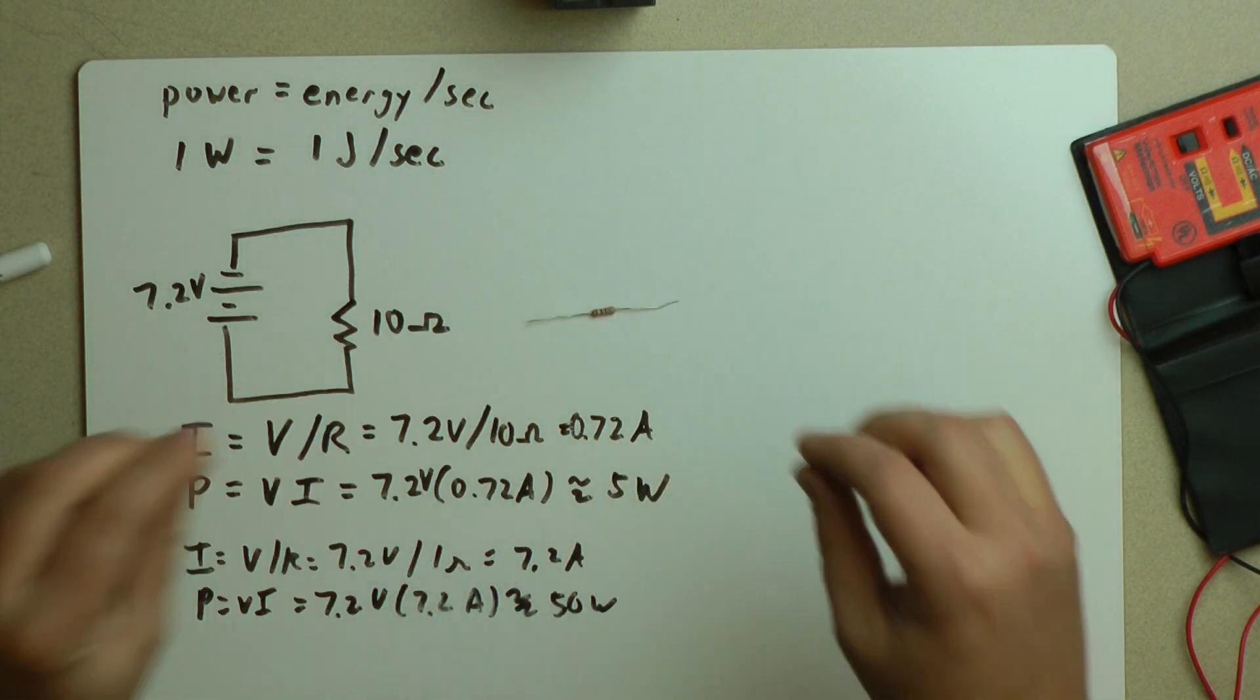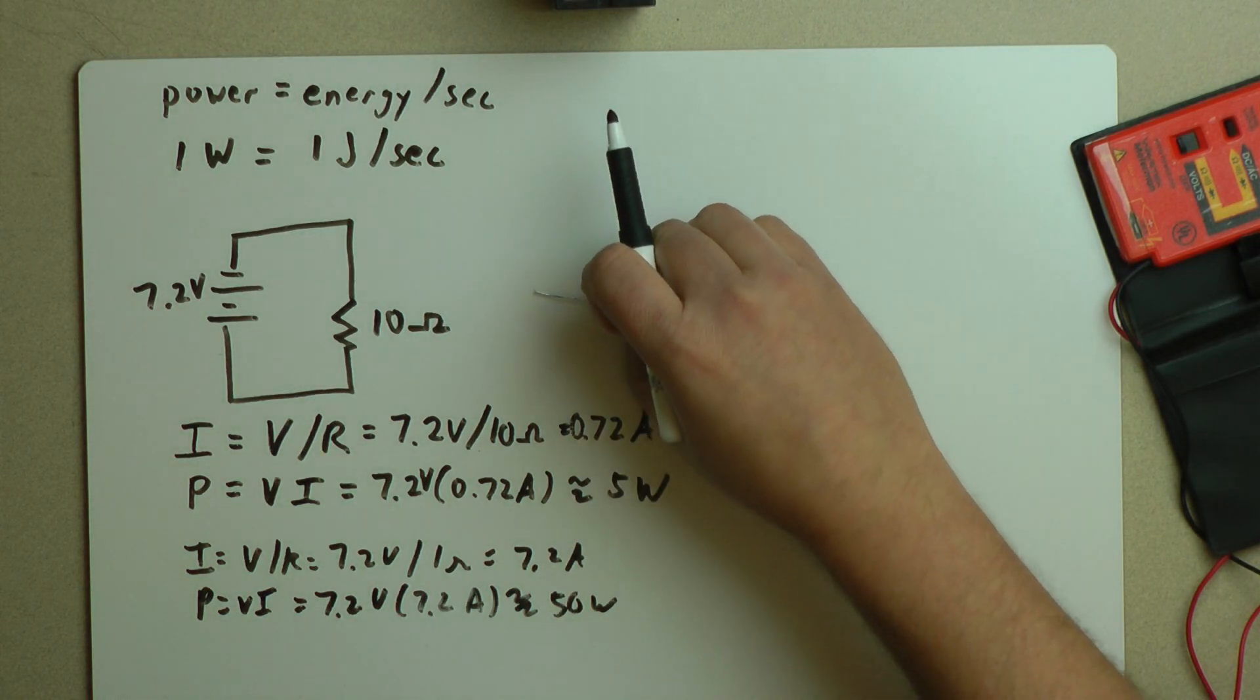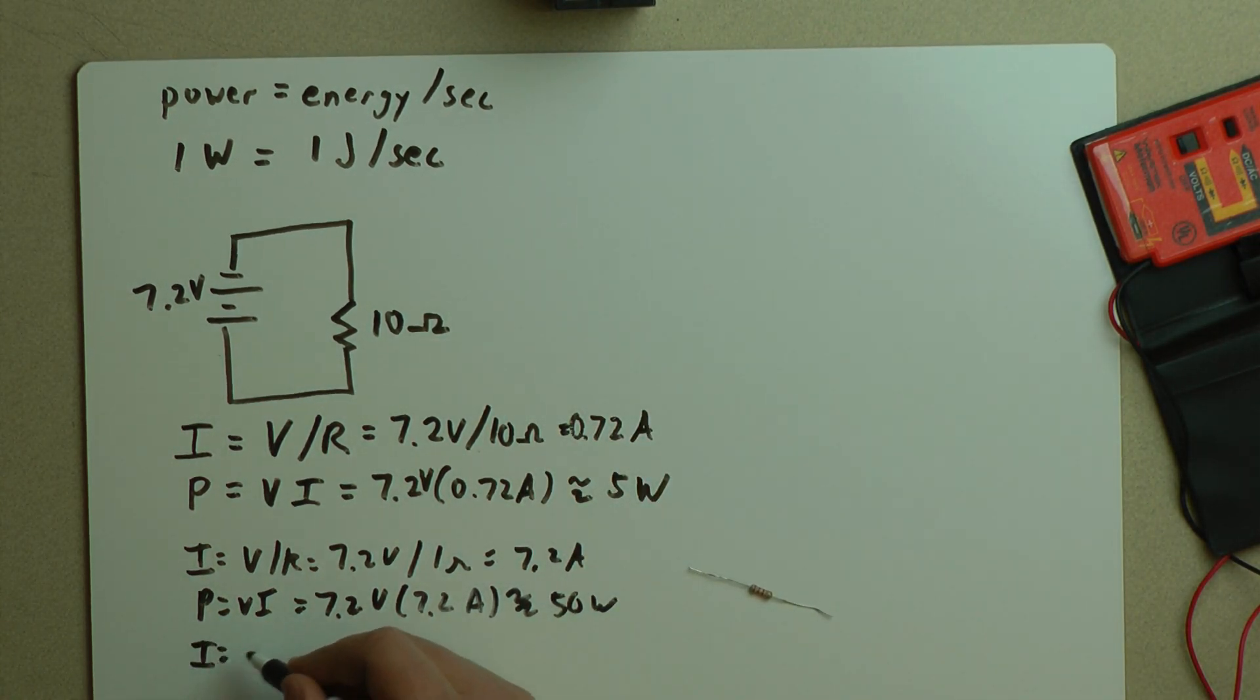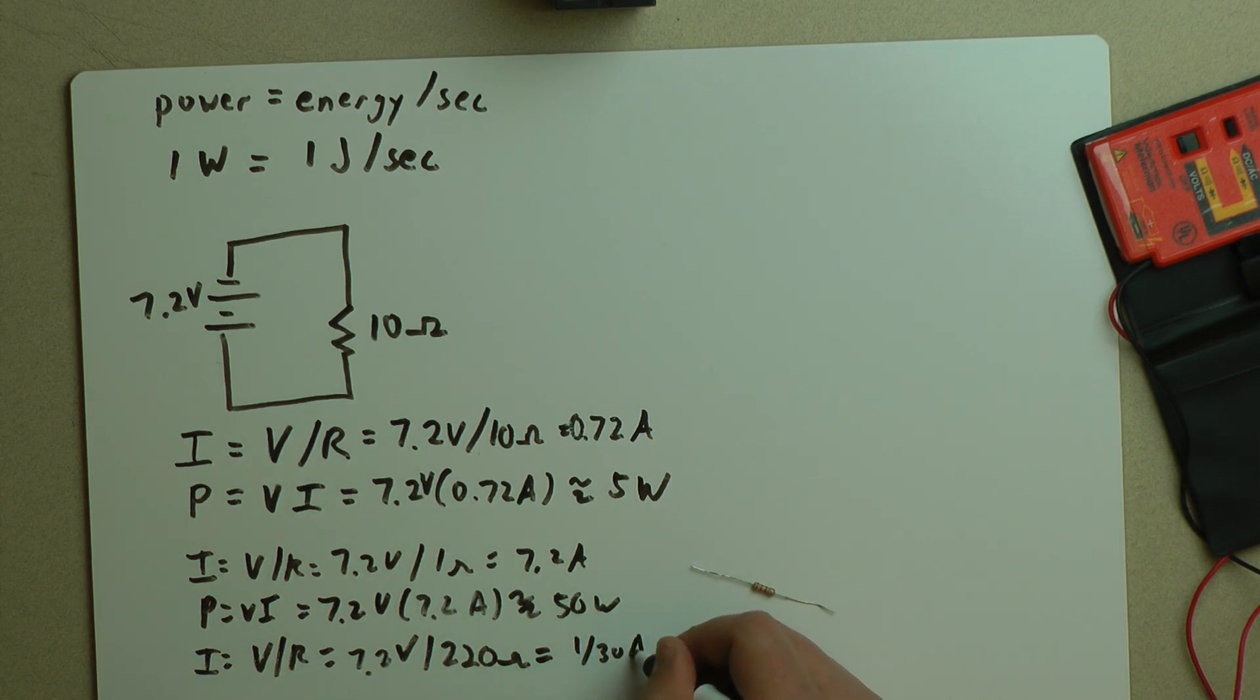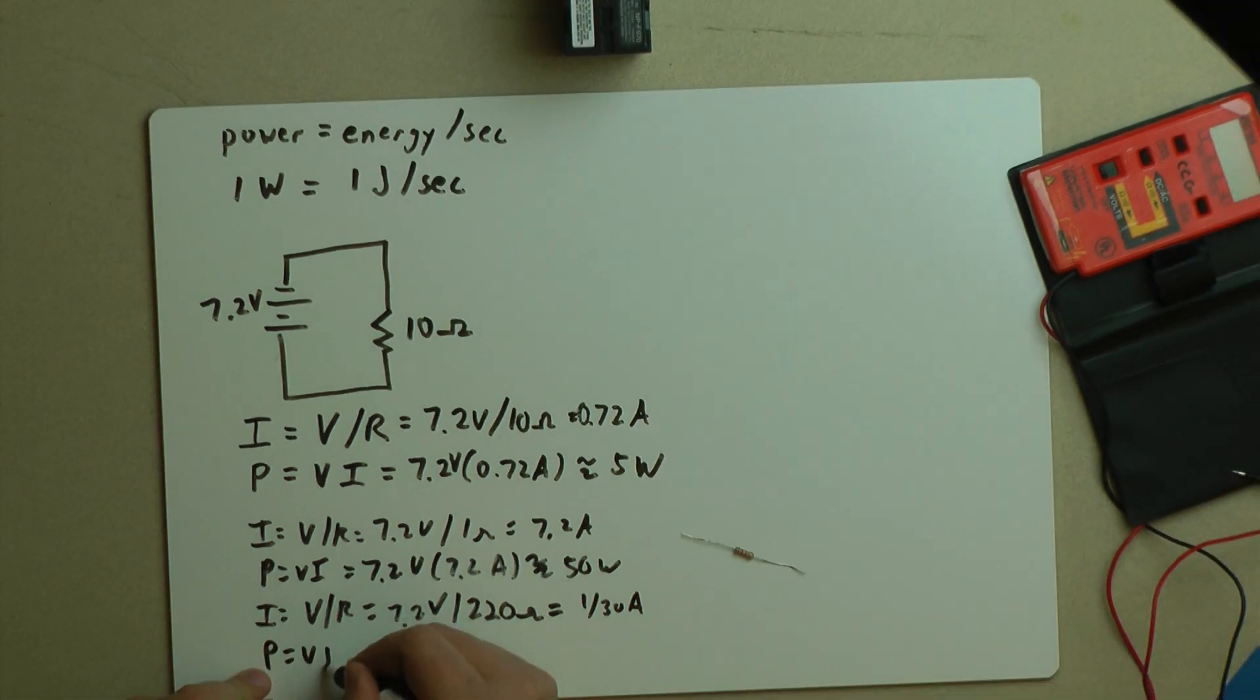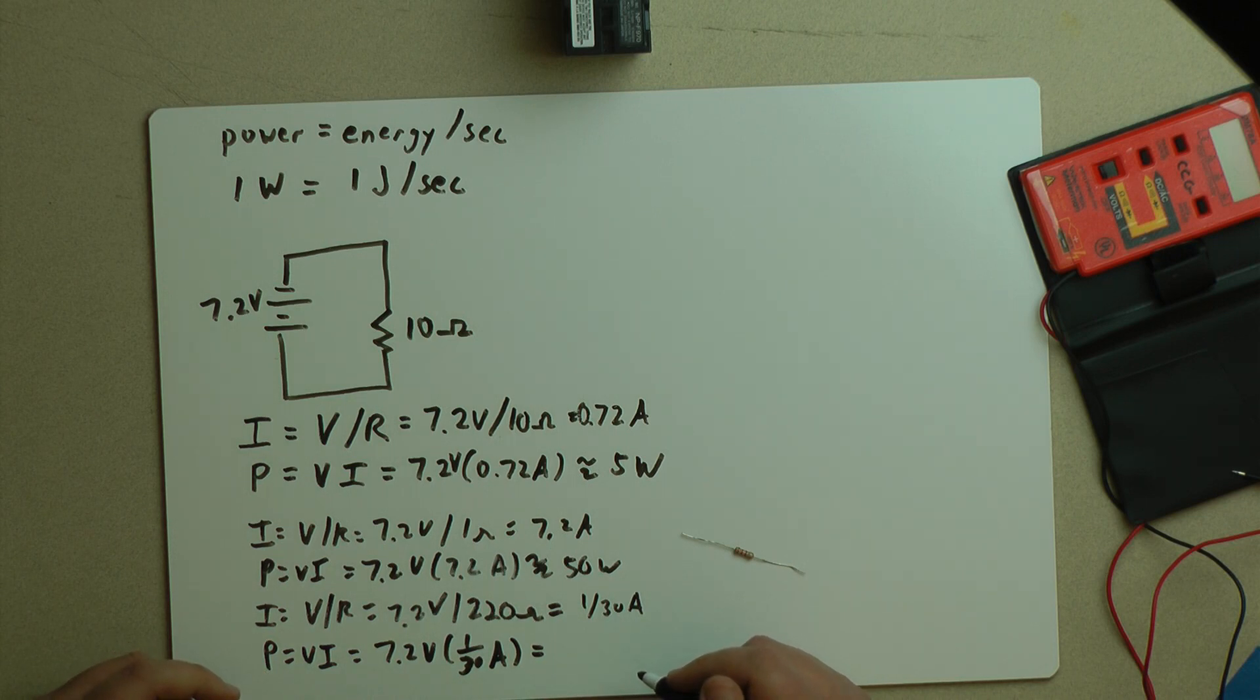Let's look at this guy. This is red, red, brown. So this is a 220 ohm resistor. If we put that in this place, let's see here. I equals V over R, which equals 7.2 volts over 220 ohms, which equals what? I've got to think about this. This is about 1/30th of an amp.